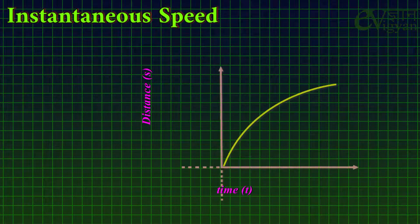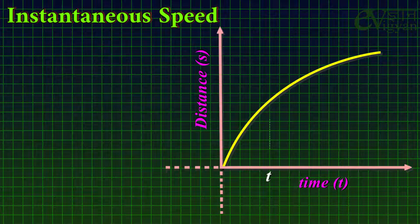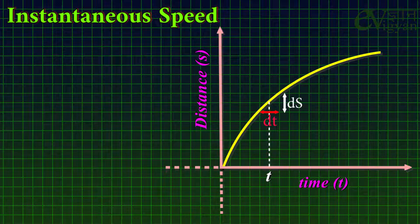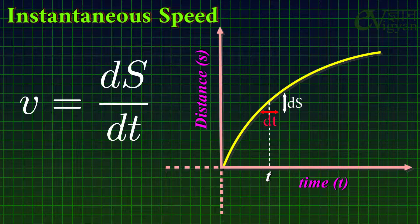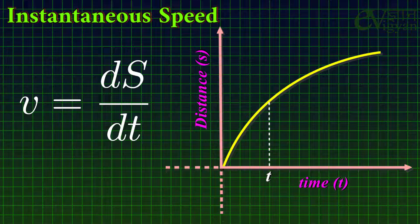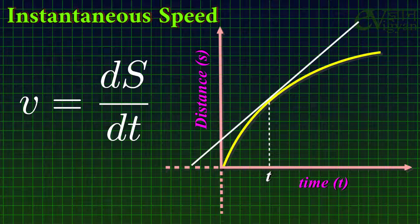First, let's talk about instantaneous speed. It is the speed of a particle at any instant of time t. If ds is the distance traveled by the particle in a very small time dt, then the instantaneous speed is given by V = ds/dt. That is, it is the rate of change of distance with respect to time, and from differential calculus, the instantaneous speed at any time t equals the slope of the tangent line on the curve in the distance-time graph at that time t.